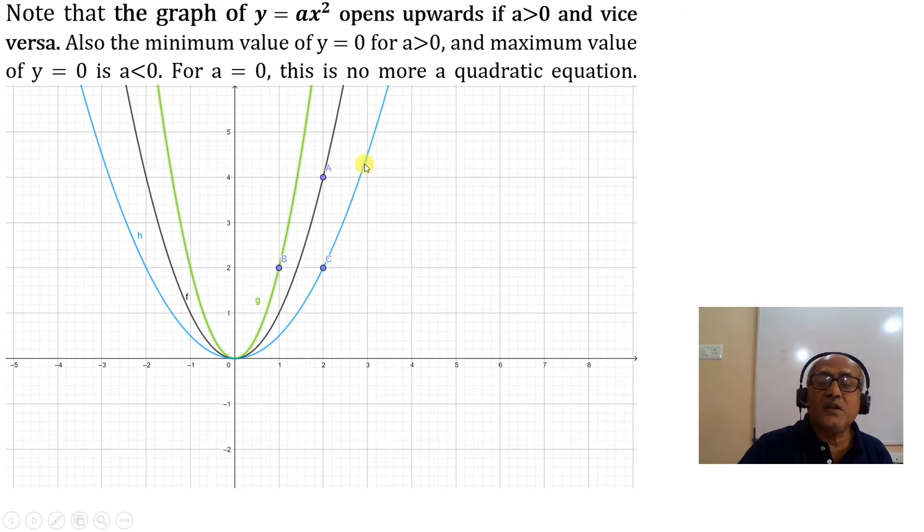You mark here that if a is more, the graph shrinks, and if a is less, the graph is wider.